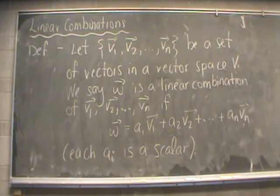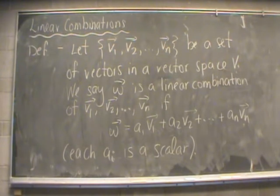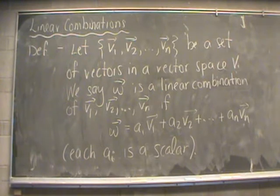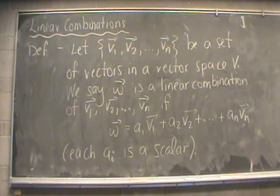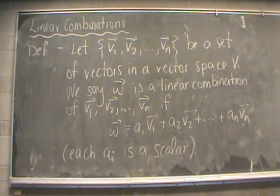Suppose that we have a collection of vectors from a vector space — v1, v2, all the way up to vn. We take a vector w inside of V and say that w is a linear combination of v1 to vn if it can be written as a1·v1 + a2·v2 + ... + an·vn, where each of the a's is a scalar number.